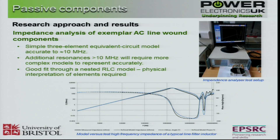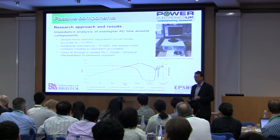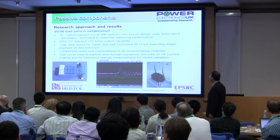The other area is looking at how high dV/dt affects the design synthesis of wound components. We need to understand the high frequency behaviour due to the higher spectrum the device is exposed to. So we've done some work on modelling state-of-the-art wound components, particularly at the higher frequency range above 10 megahertz - understanding parasitic capacitance, inter-turn parasitic capacitance, turns-to-case and earth parasitic capacitance - to develop a nested RLC model. The important thing moving forward is the physical interpretation of those elements: how do I get rid of a particular resonant effect, and how do I change the design to do that?